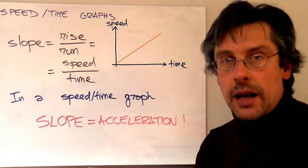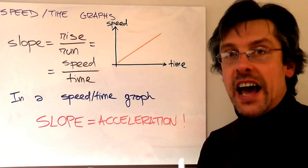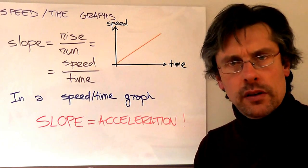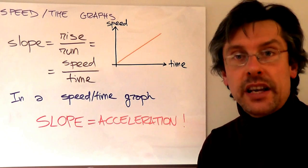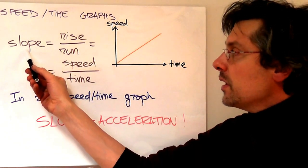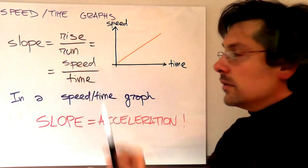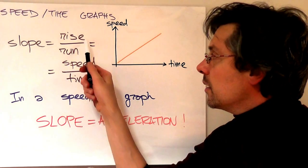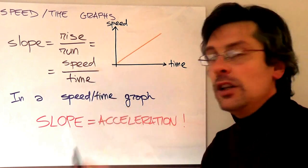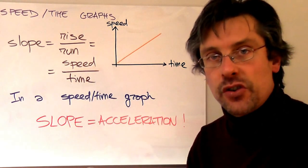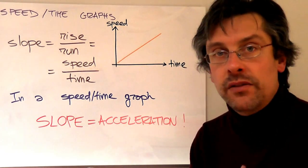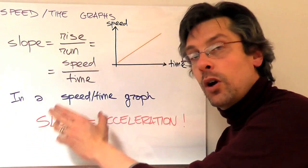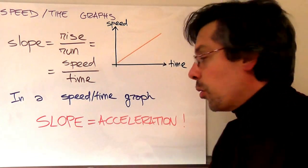If you remember, in a distance-time graph the slope of a line gave us the value of speed. Now we already have the speed in a speed-time graph, so does the slope have a specific meaning? The answer is yes. The slope is given by the ratio between rise and run. The run is again time, but now the rise is the speed — so we have speed over time, or change of speed over time. And we know what that is: that is acceleration. So the slope of a line in a speed-time graph is equal to the acceleration.